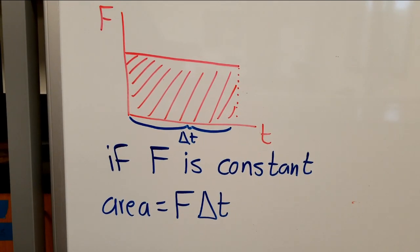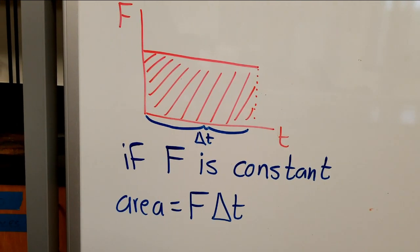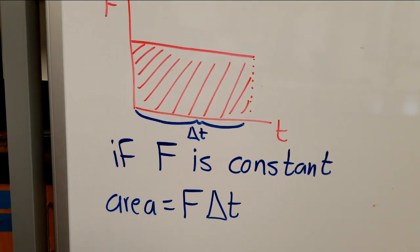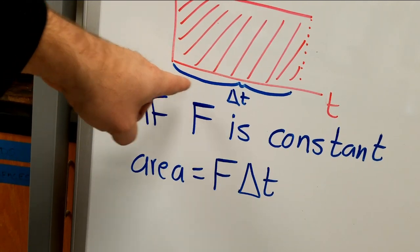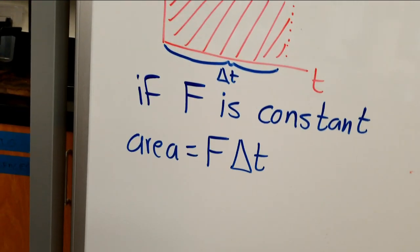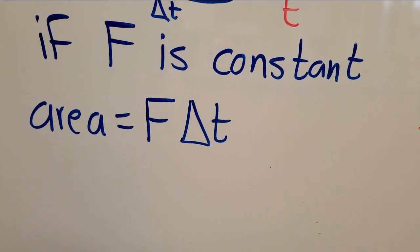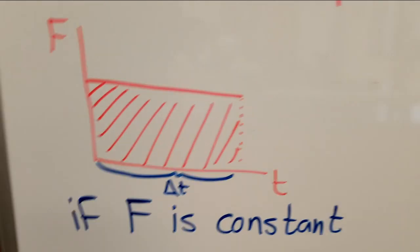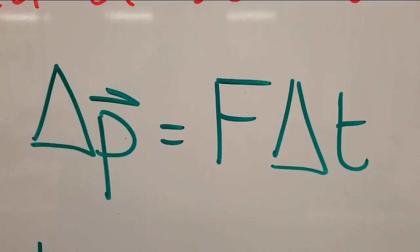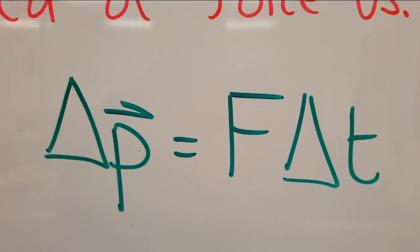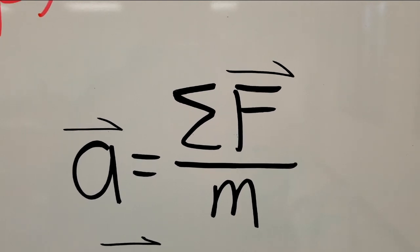If the force is constant then the area of the graph would be like the area of a rectangle. You would just multiply force, which would be this side of your rectangle, times delta t, which would be this side of your rectangle. You can rewrite area as like an equation, area equals F delta t. So for a constant force I can write the impulse momentum equation like this: delta P equals F delta t. Let's see how that looks like our first statement of Newton's second law.